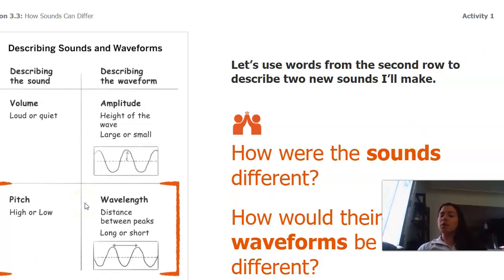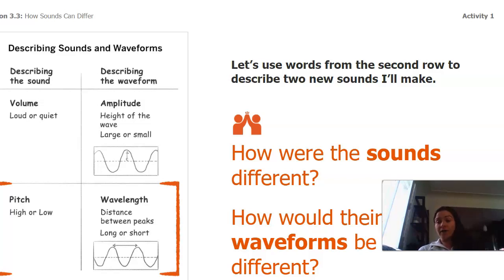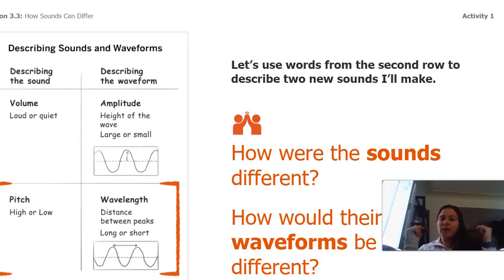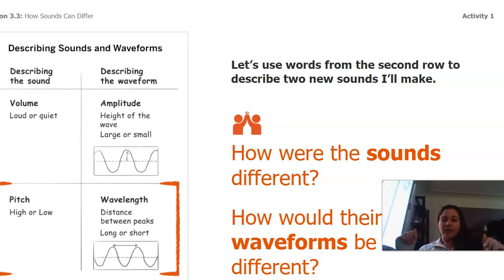Now let's talk about pitch, which is what we talked about in our last lesson. If I am talking to a dog, sometimes the pitch of my voice changes — I might say 'hi doggie' in a high pitch or 'hi doggie' in a lower pitch, and those wavelengths would look different too. Think about it: pitch is about the wavelength — how squished together or how far apart those wavelengths are. When I say 'hi doggie' in a high pitch, those waves are a lot closer together than in a lower pitch.